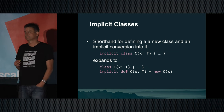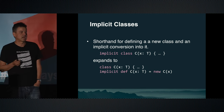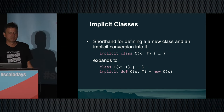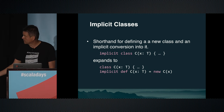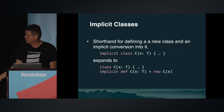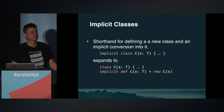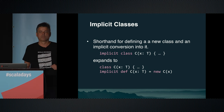There's a third thing, which is really just syntactic sugar: implicit classes. That's just a shorthand for defining a class and an implicit conversion that goes into the class. If you write 'implicit class C' with a parameter X of type T, that expands to a normal class and an implicit def with the same name that creates a new instance of the class. A very compact way to define a class and a conversion into it.